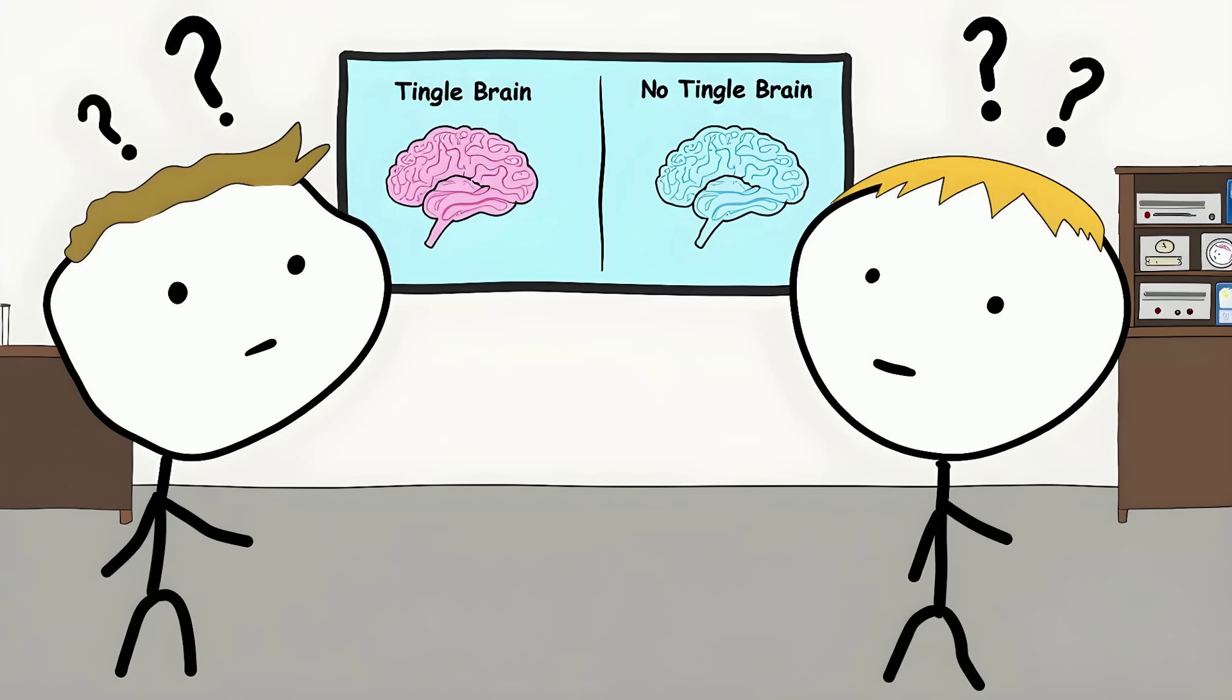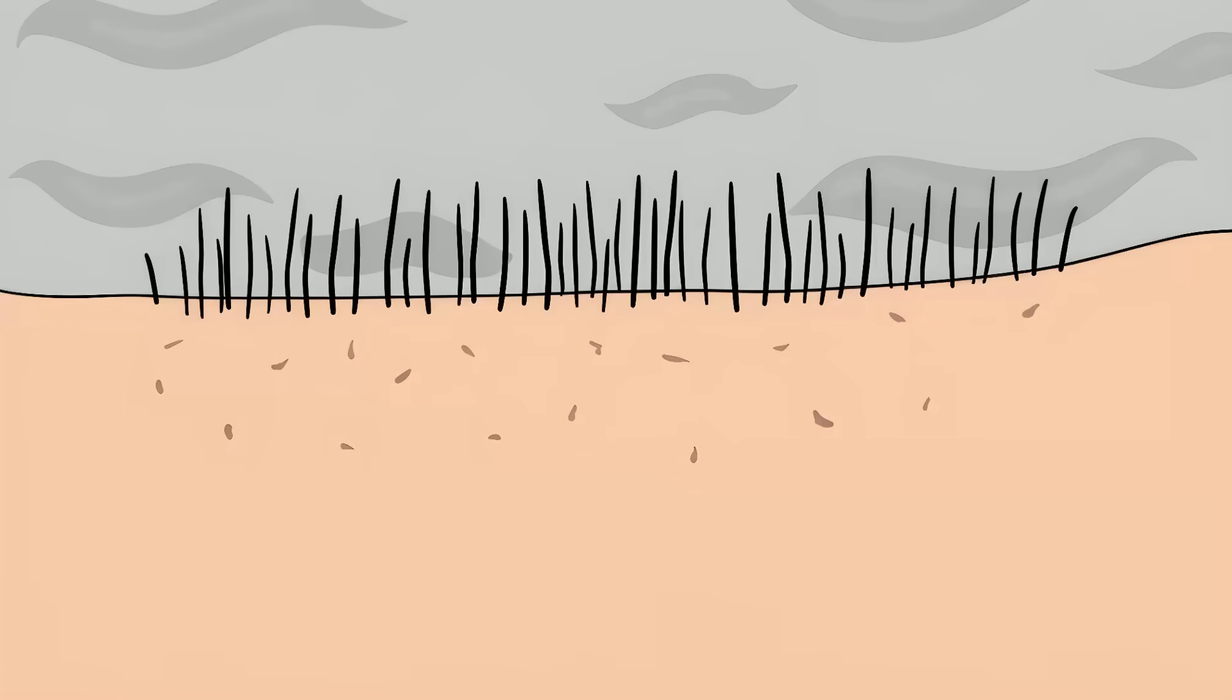Despite all this research, they still can't fully explain why some brains are wired for these tingles and others aren't, or why the body responds to an emotional moment by making arm hair stand up.